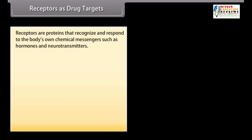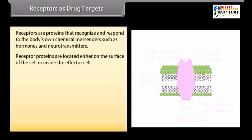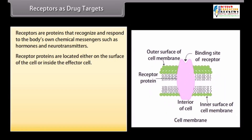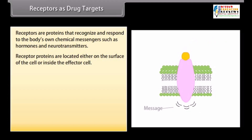Receptors are proteins that recognize and respond to the body's own chemical messengers such as hormones and neurotransmitters. Receptor proteins are located either on the surface of the cell or inside the effector cell. In the body, messages between two neurons and between neurons and muscles are communicated through chemical messengers, which are received at the binding sites of the receptor. To accommodate a messenger, the shape of the receptor site changes. This brings about the transfer of message to the cell.